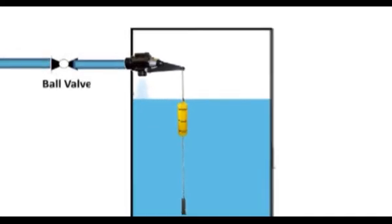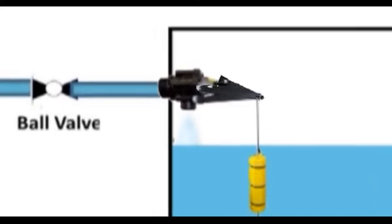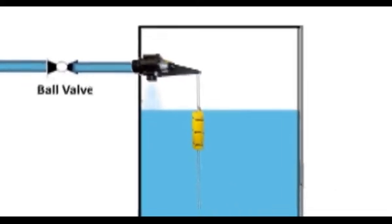Once float reaches to maximum level, weight of same will be nulled and differential float will be closed. Once valve is closed, water delivery will be stopped and pressure in pipe will get increased.